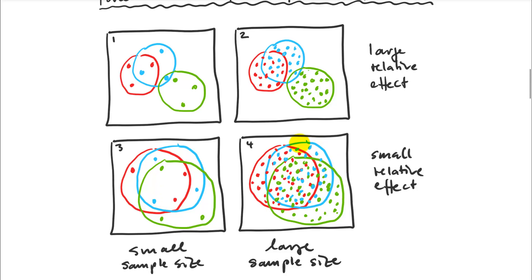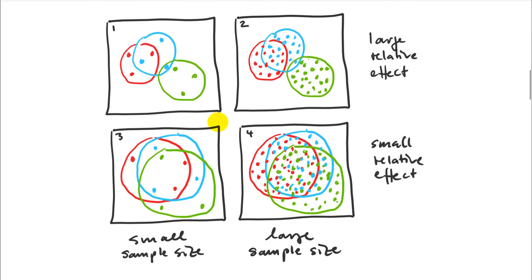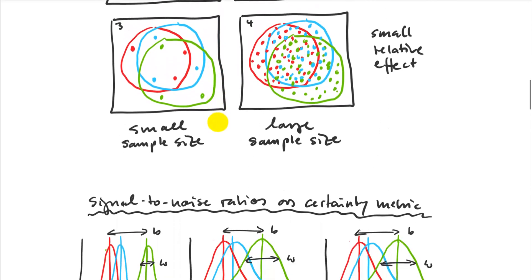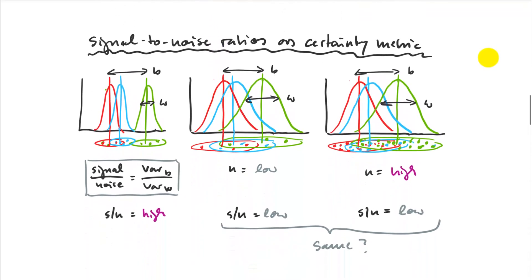Even intuitively, you will trust an experiment with a larger sample size more than one with a smaller sample size. In both cases, whether it's a large effect size or a small effect size, the experiment with larger sample size is always more certain. In this intuitive relationship of certainty, I can also actually quantify this as a signal-to-noise ratio: how big is your signal between the means compared to the noise within my groups.